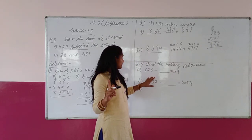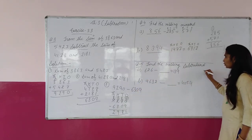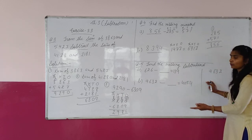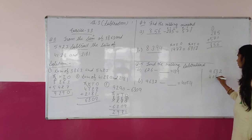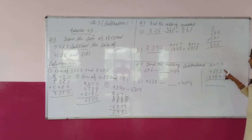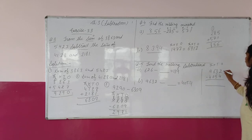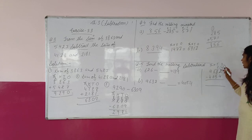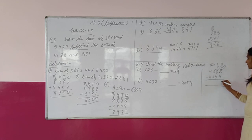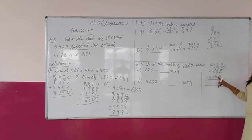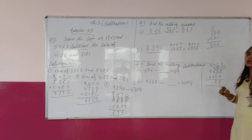Part A आपको खुद करना है. I will solve Part B. 9,632 minus 4,054. 2 में से 4 subtract नहीं होगा — we have to take the borrow. Next place पे 3 है, 3 बन गया 2, और 2 बन गया 12. 12 में से 4 subtract = 8. Now 2 में से 5 subtract नहीं होगा — again borrow. 6 बन जाएगा 5, और 2 बन जाएगा 12. 12 में से 5 subtract = 7.